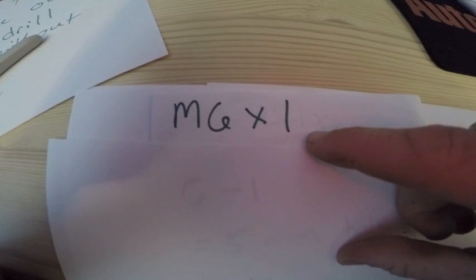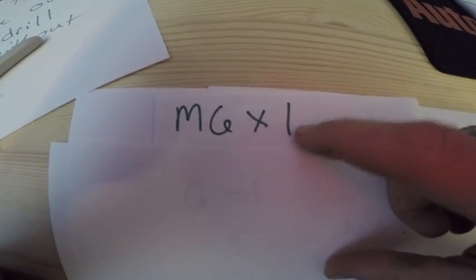All right, I know someone's going to say, hey, what about metric holes? I've got a metric bolt I want to mount in there. So let's say you got an M6 by 1. No problem, you can figure this out too.